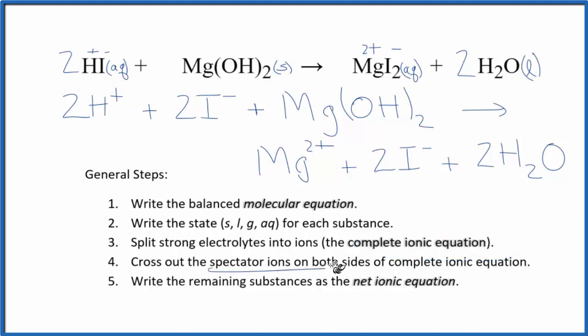Now we can cross out the spectator ions. They're on both sides of the complete ionic equation. They haven't changed, so we're really not interested in them. I can see that I have two iodide ions in the reactants and two in the products, so I'm just going to cross those out. But everything else is unique, and that makes this the net ionic equation for HI plus Mg(OH)₂. Let me clean this up and add the states, and we'll have our net ionic equation.